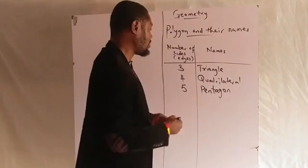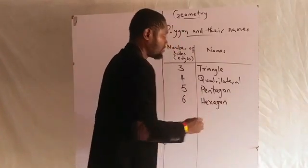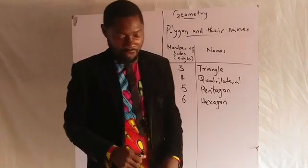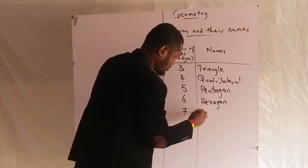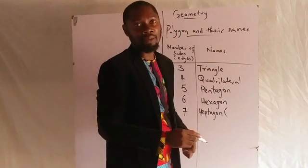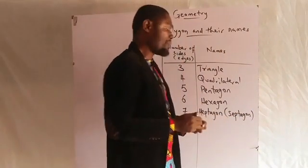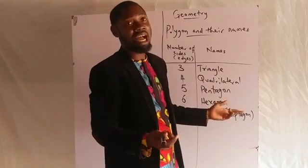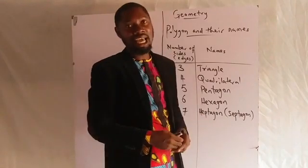The six-sided shape is called the hexagon. And the seven-sided shape is called the heptagon. It can also be called septagon — some people call it septagon, some call it heptagon; both are acceptable. That is the seven-sided shape.